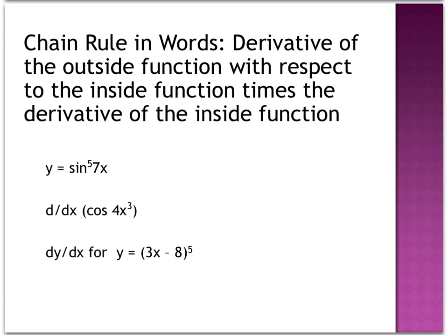The chain rule in words — you need to memorize this — is: the derivative of the outside function with respect to the inside function, times the derivative of the inside function. So when you derive the outside with respect to the inside, that means leave the inside alone, but then multiply by the derivative of the inside function. Let's take a look at a couple of examples.